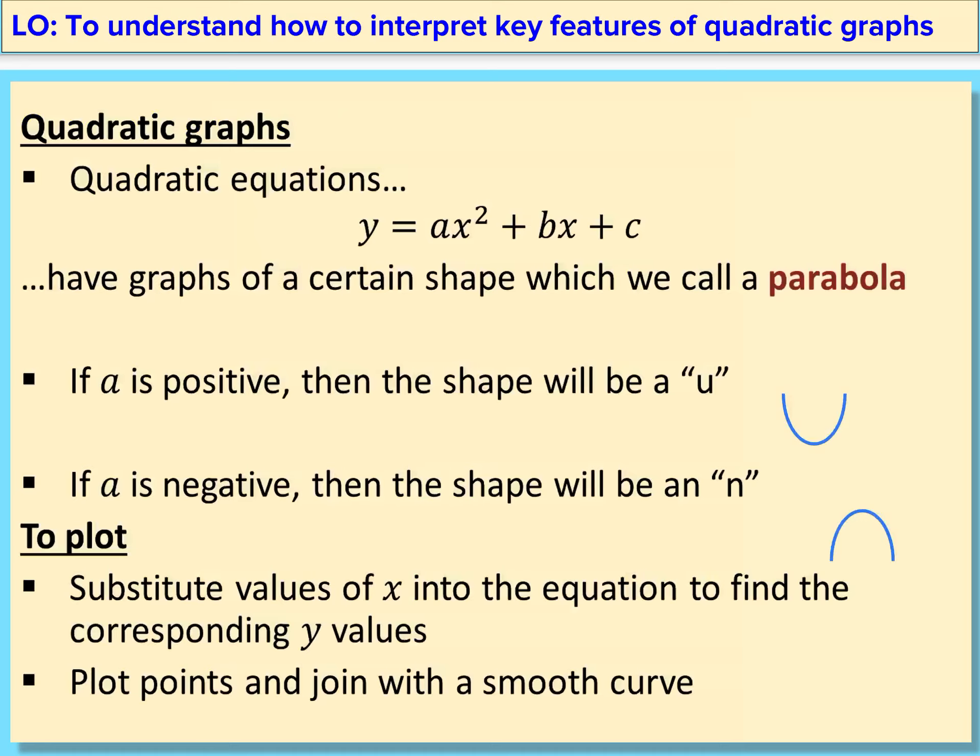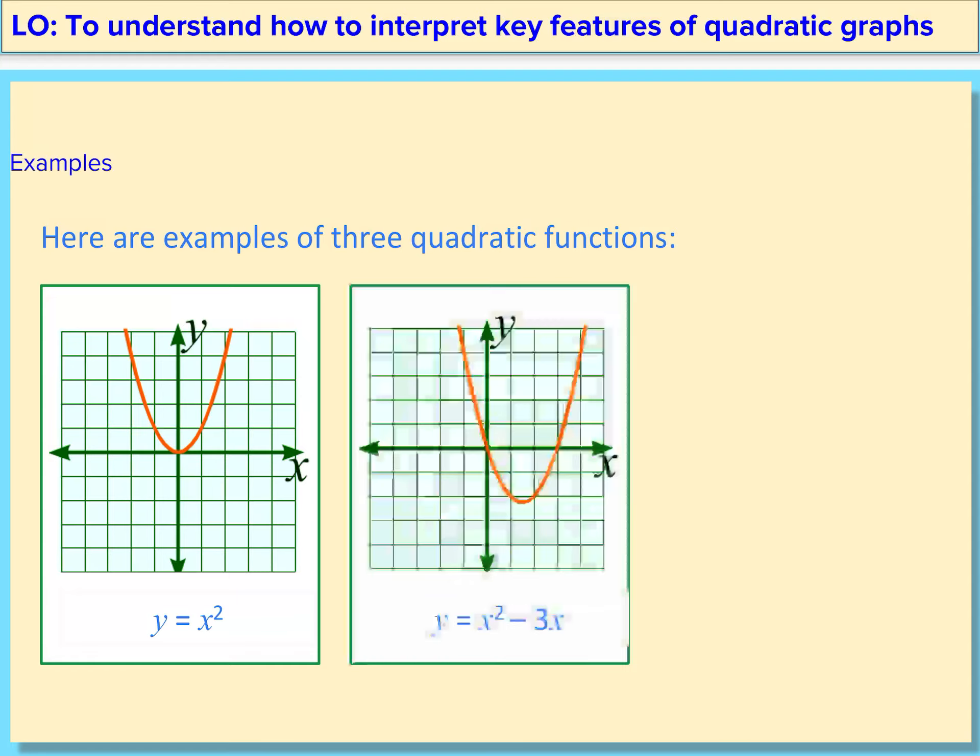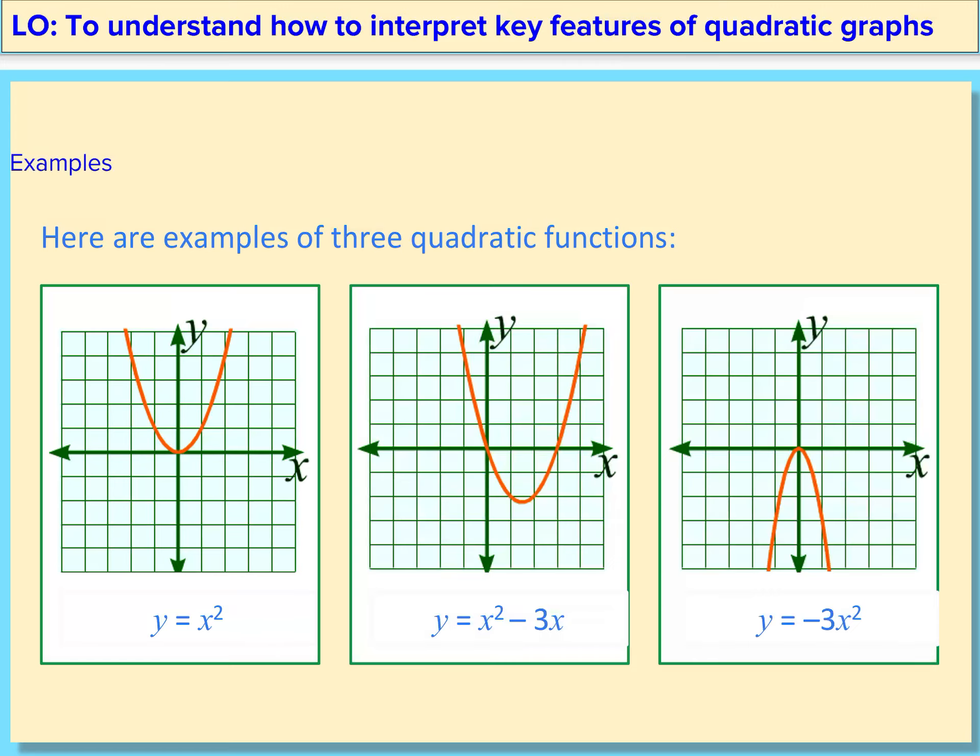Quadratic graphs are given to us in the shape of a parabola. Quadratic equations are given to us as y equals ax squared plus bx plus c, where c is the y-intercept. If a is positive, the shape will be in a u, and if a is negative, then the shape will be in an n. To plot such graphs, you need to substitute the values of x into the equation to find the corresponding y values. Plot points and then join with a smooth curve.